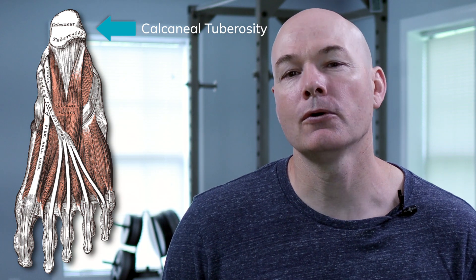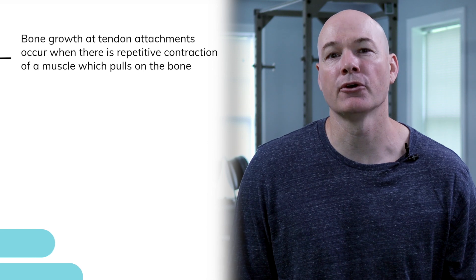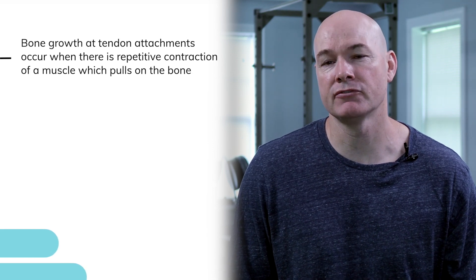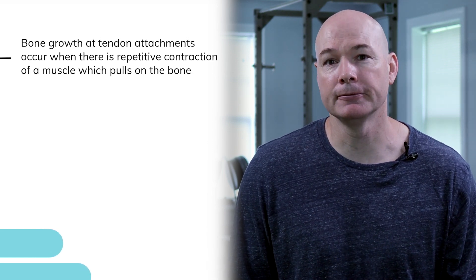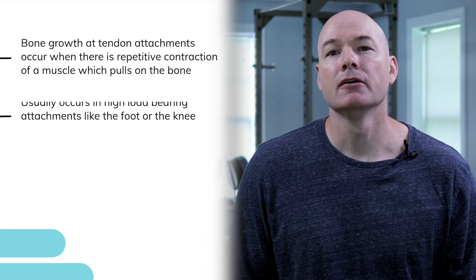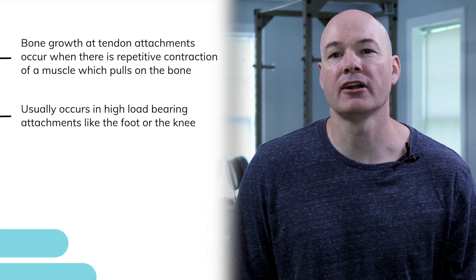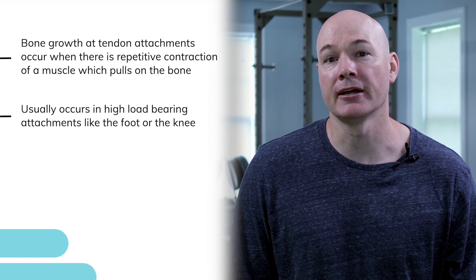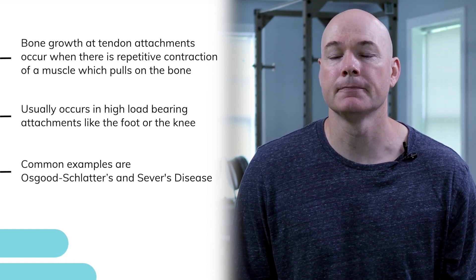The attachment of these muscles — the calcaneal tuberosity — also happens to be the exact location where some people develop heel spurs, and it's also the point where providers press to diagnose plantar fasciitis. Bone growth at tendon attachments occurs when there is repetitive contraction of a muscle which pulls on the bone. This type of bone growth usually occurs in high load-bearing attachments, like the foot or the knee.